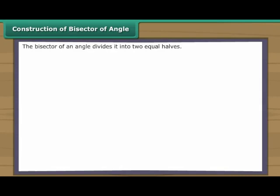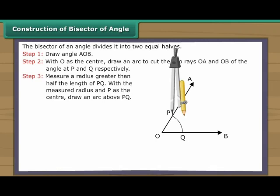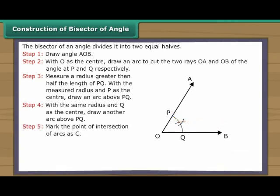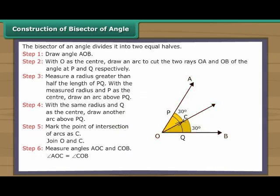Construction of bisector of angle. The bisector of an angle divides it into two equal halves. Let us learn to construct an angle bisector. Draw angle AOB. With O as the centre, draw an arc to cut the two rays OA and OB of the angle at P and Q respectively. Measure a radius greater than half the length of PQ. With the measured radius and P as the centre, draw an arc above PQ. Mark the point of intersection of arcs as C. Join O and C. Measure angles AOC and COB. Angle AOC is equal to angle COB. Therefore OC is the bisector of angle AOB.